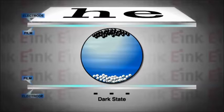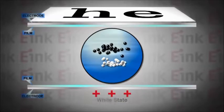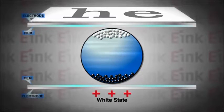Simultaneously, the white particles move to the bottom where they are hidden to the viewer. By reversing this process, the white particles are driven to the top of the capsule, making the top surface appear light.